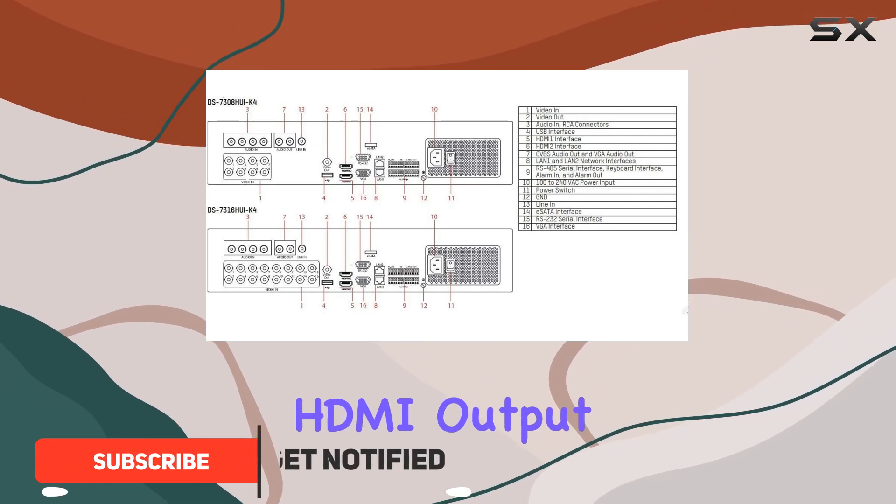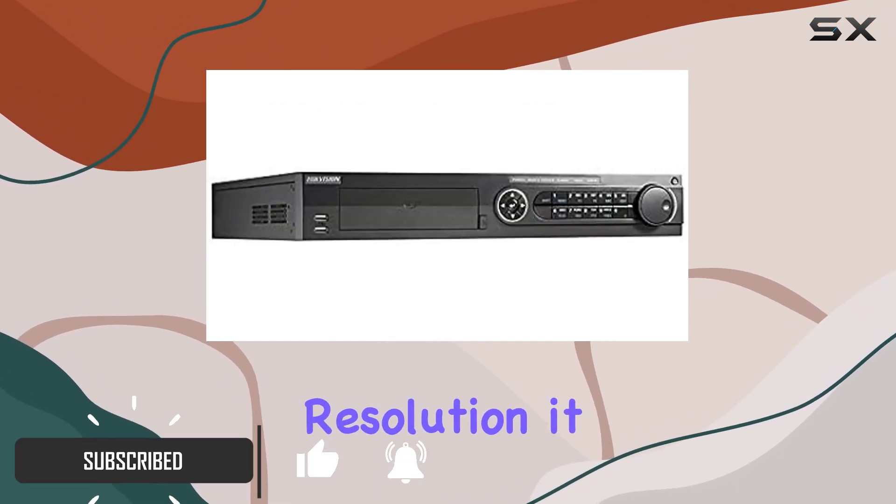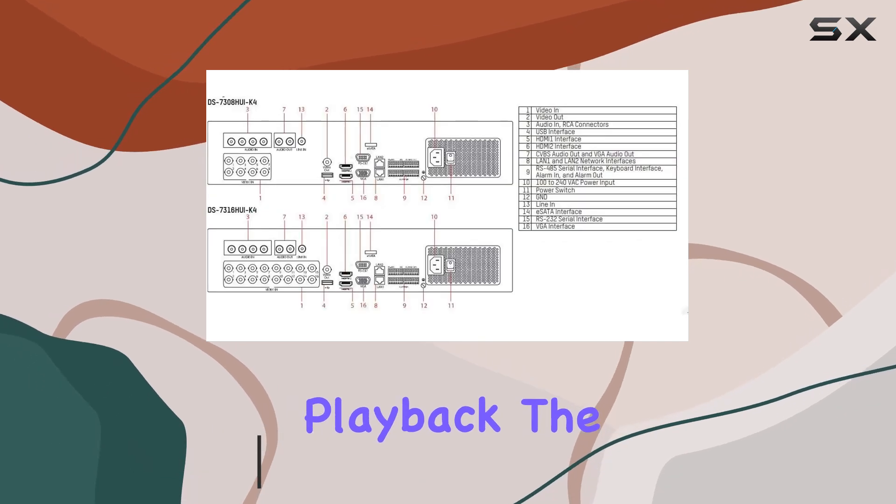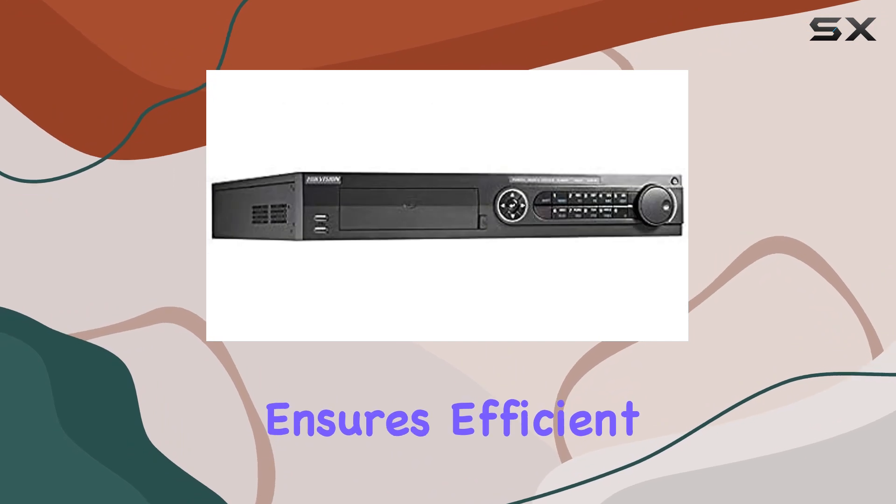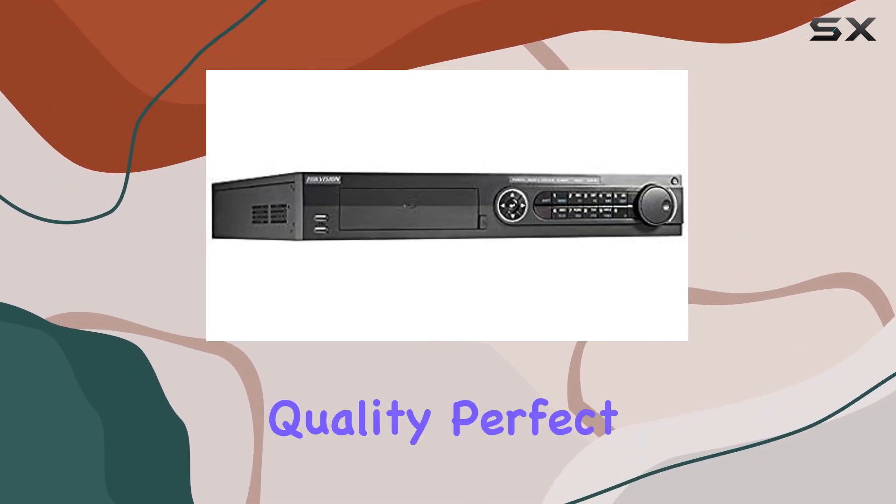Boasting HDMI output at up to 4K resolution, it delivers crisp, detailed video playback. The use of H.265 Pro Plus encoding ensures efficient video compression without compromising quality.